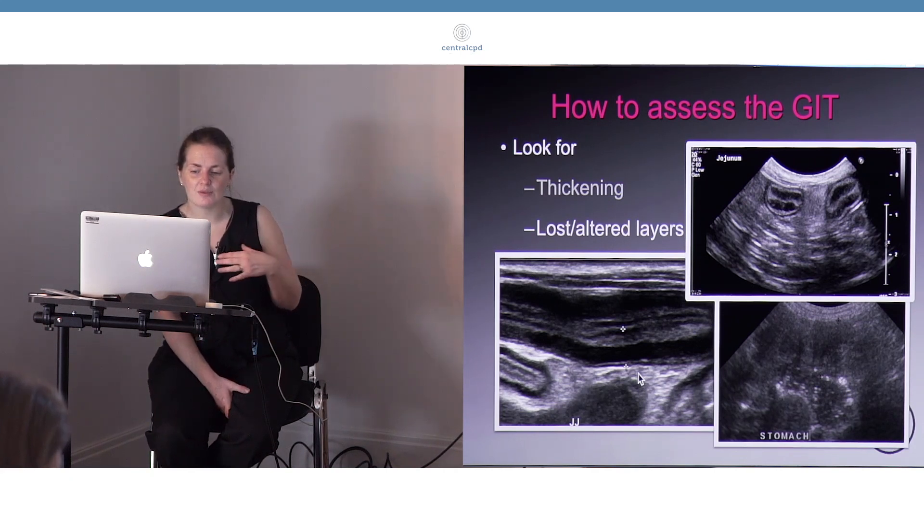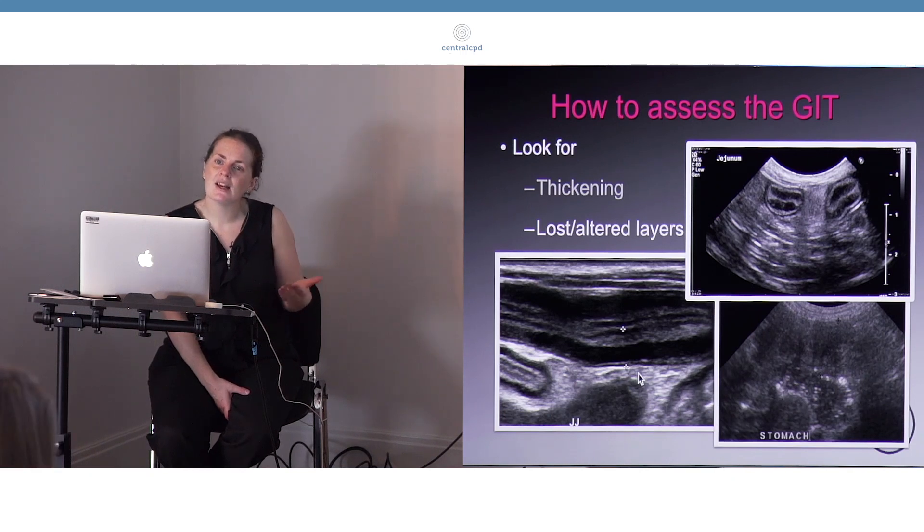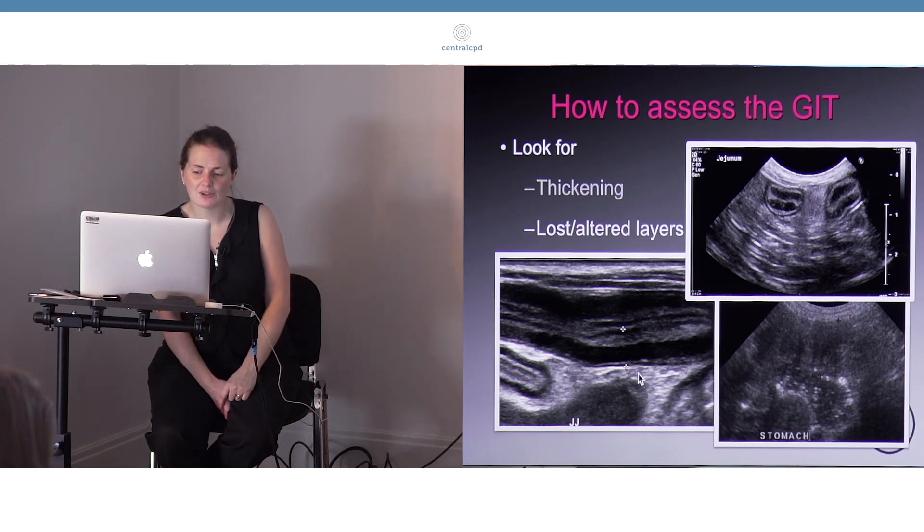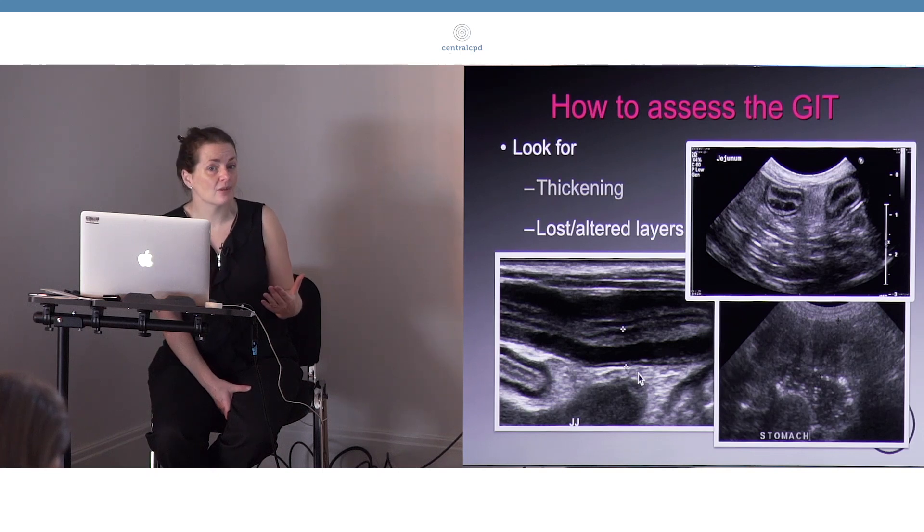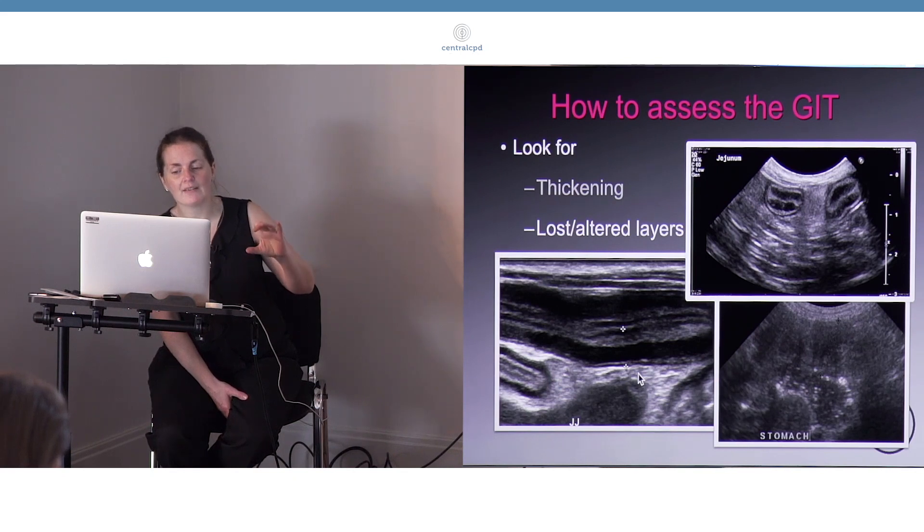Some of them have been associated just with chronicity, maybe some fibrosis being deposited. In cats that's been shown—some of these cats have chronic IBD, have had extra layers. In some cases, it's been shown as having no clinical significance whatsoever.